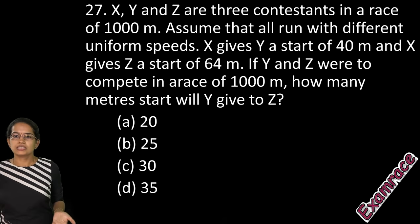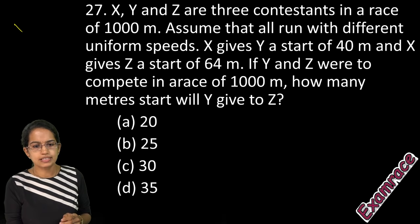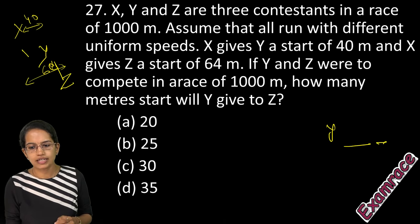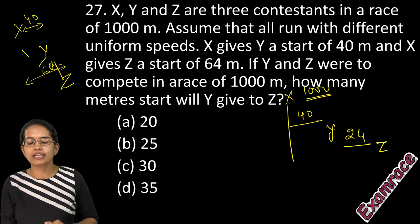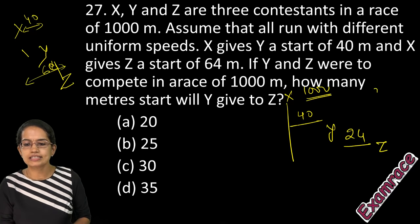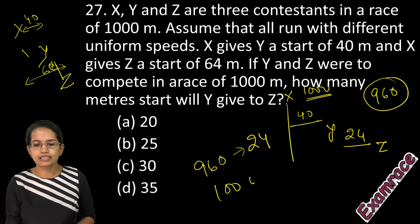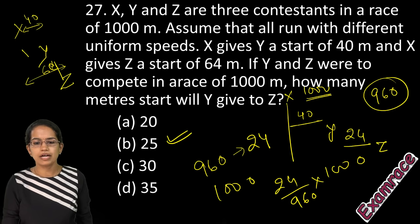The next question is on races — a very direct question, mostly covered from postal material. In a 1000m race, X gives Y a head start of 40m and Z a head start of 64m. From Y to Z the gap is 24m, but Y already gets a 40m head start from X, so the remaining race for Y is 960m. In that 960m, the head start given is 24m. For 1000m: (24 / 960) × 1000 = 25. So the answer is 25.